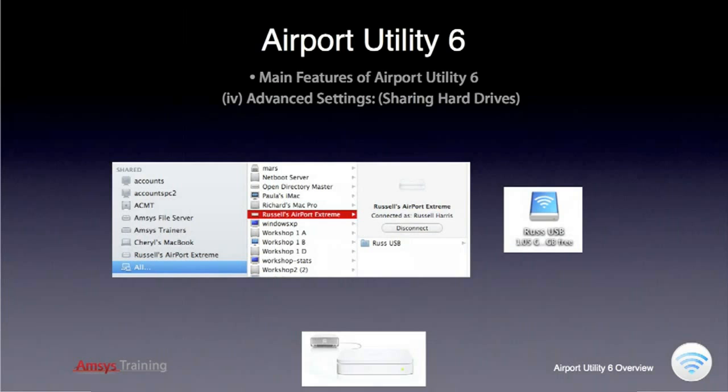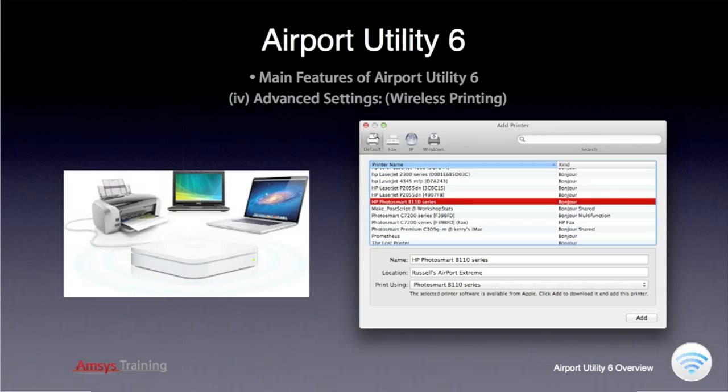To access this shared drive from a Mac is just like accessing any network share. In any Finder window, look for the name of your Base Station under the Shared section of the sidebar and select it. Once you have entered the password for the shared disk, it will mount on your computer. Wireless printing is as simple as connecting a USB printer to the USB port on your Airport Base Station, and then using the Mac and PC compatible Bonjour Network technology to browse for the printer just like any other network printer.